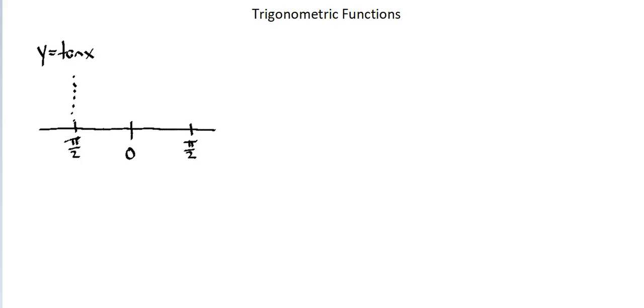At negative pi over 2 and positive pi over 2, we're going to have vertical asymptotes. Our graph is going to move up and to the right, close to but not touching negative pi over 2, going through 0, and then close to but not touching pi over 2.